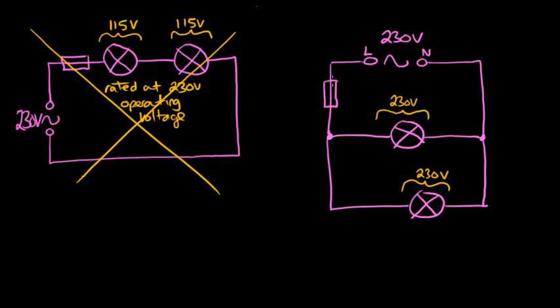So if we put our fuse here, it means that if there's a problem, for example, if there's suddenly a high current flowing through this lamp because it's short circuited or there's a fault, then that means that high current will also flow through the fuse and that will make the fuse melt which will disconnect the live wire from both of the lamps.